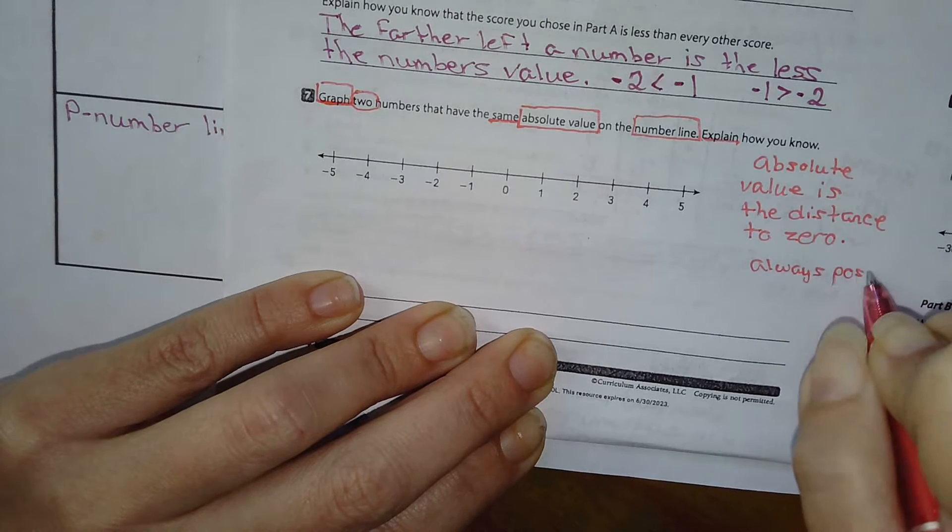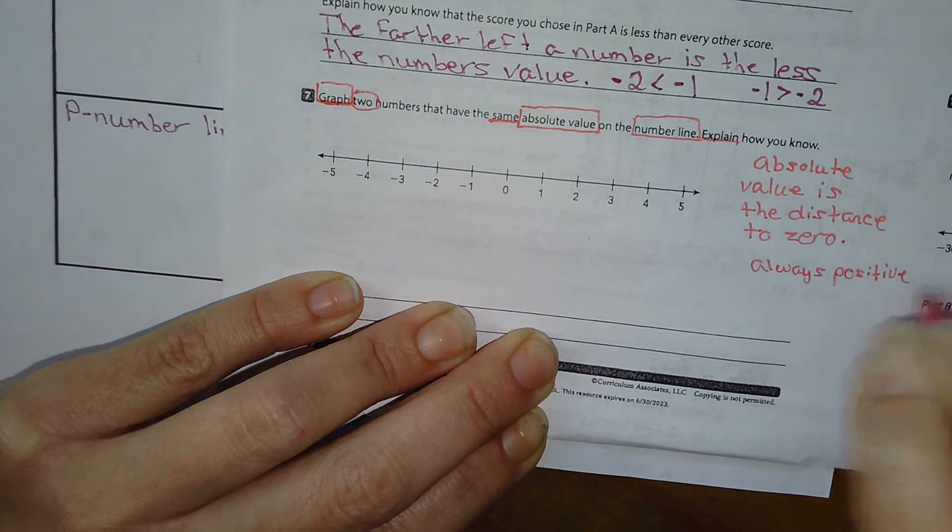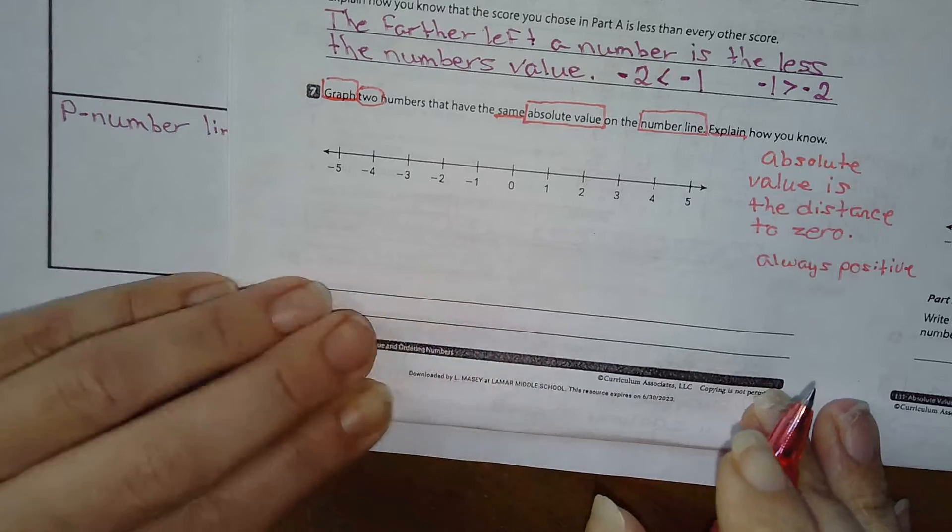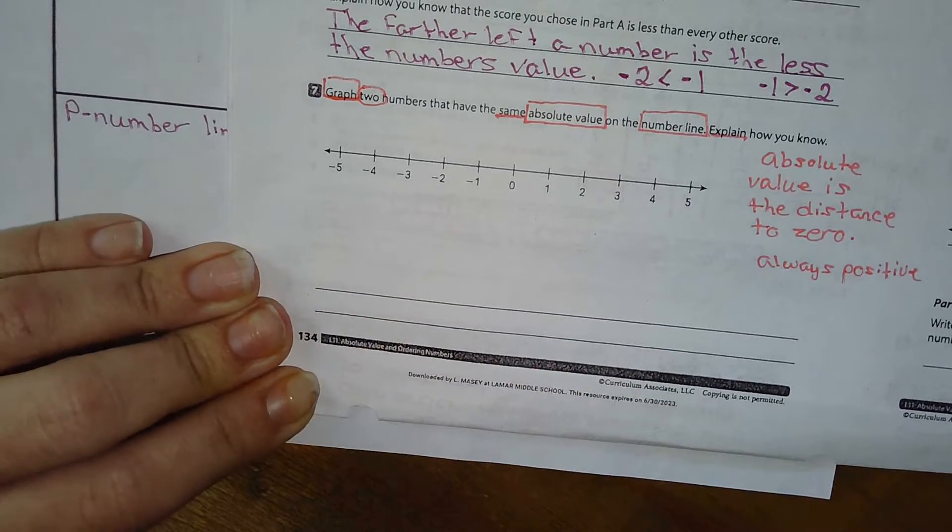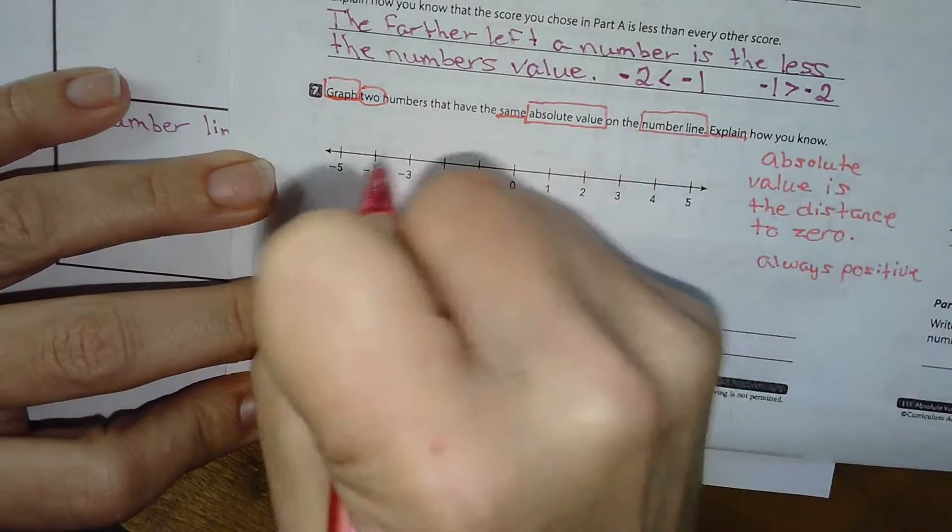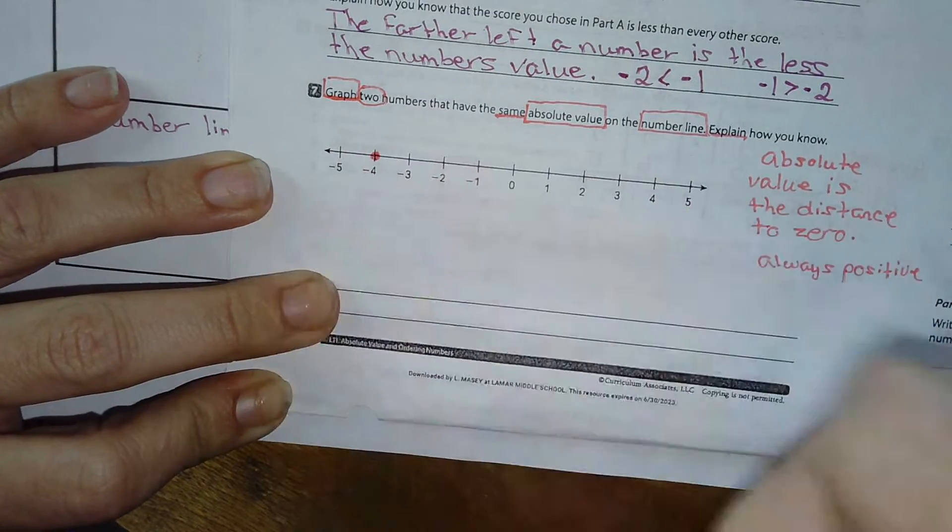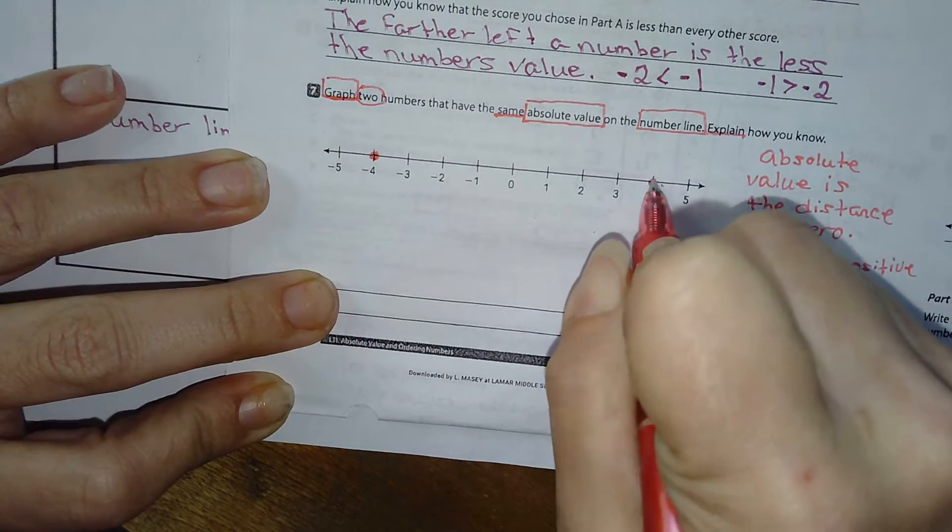So even before I start, I am proving my answer by showing my thinking, right? I'm getting everything out. I call this a brain dump. So I'm just going to choose negative 4 and 4, okay?